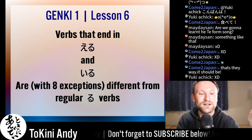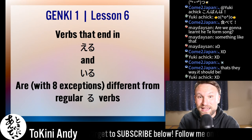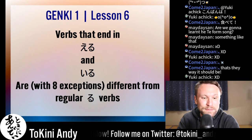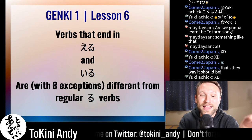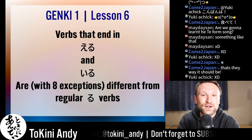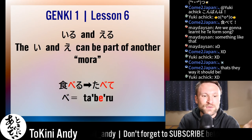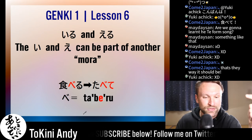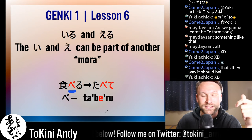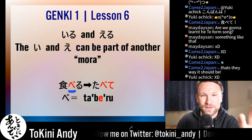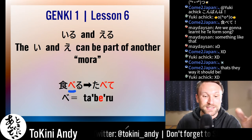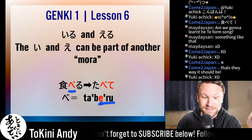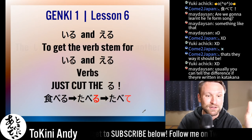The exceptions to the ru verbs are the ichidan verbs — verbs that end in the 'eru' sound or 'iru' sound. There are also eight exceptions to this rule: even though those eight verbs end in 'iru' or 'eru,' they're conjugated the same as regular ru verbs — godan verbs. The ichidan verbs ending in 'iru' and 'eru' — the 'e' can be part of another mora. For example, 'taberu' — the last character before 'ru' is 'be,' which ends in an 'e' sound. This is what we mean by an 'eru' verb.